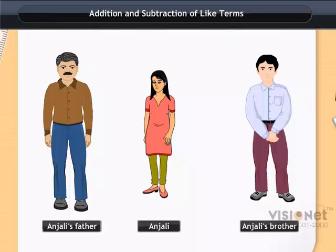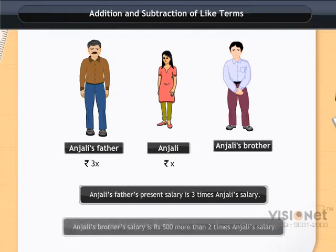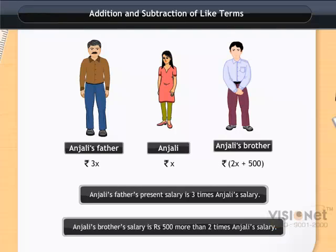Addition and subtraction of like terms. Anjali's father's present salary is 3 times Anjali's present salary. Anjali's brother's salary is Rs. 500 more than 2 times Anjali's salary. How can we find their total salary? Let the salary of Anjali be Rs. x.